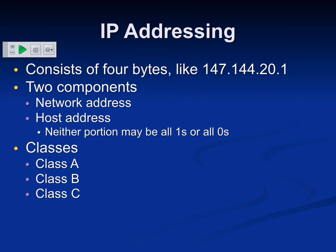When the internet started there was only one class - the first byte determined the network and the other three were to number devices on your network, so the entire internet could never have more than about 250 networks. That seemed fine in the beginning because there were only four servers on the internet, each costing a million dollars. Nobody understood Moore's law - computers kept getting faster at an insane rate unlike any other human technology.